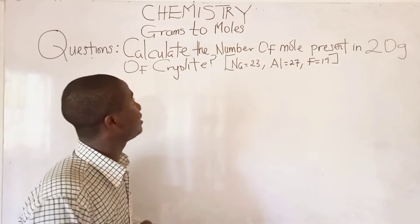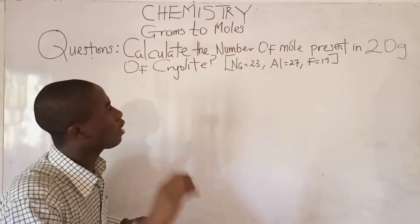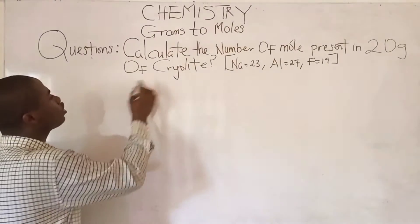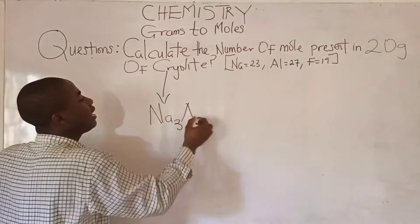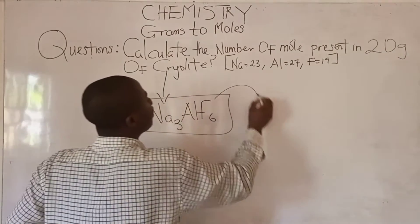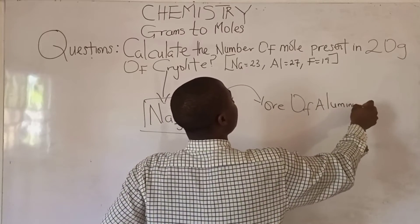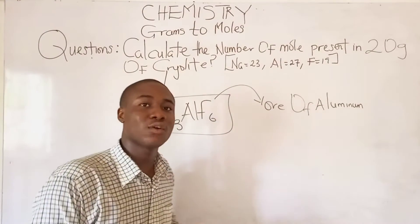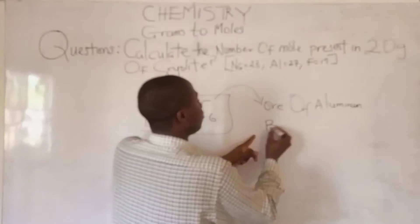The next question you will solve and provide the answer in the comment section below. The question says: calculate the number of moles present in 20 grams of cryolite. Cryolite has the chemical formula Na₃AlF₆. It must be noted that cryolite is one of the ores of aluminum, along with other ores like bauxite, corundum, kaolin, and mica.